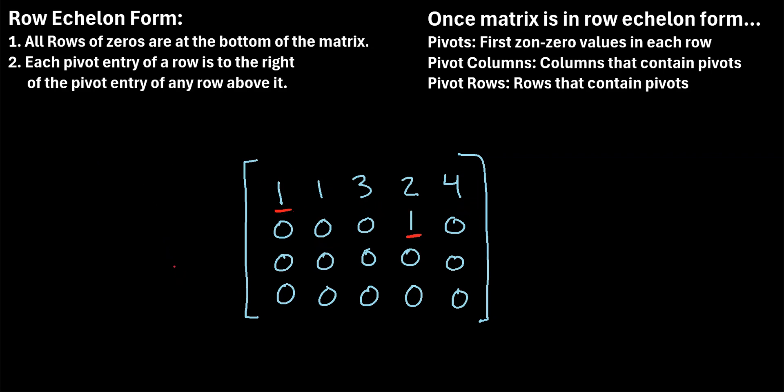Those were just a few examples of how to identify pivots, pivot columns, and pivot rows.